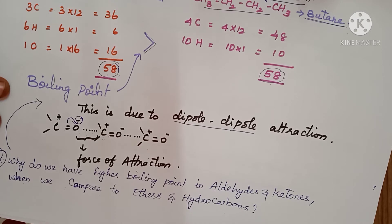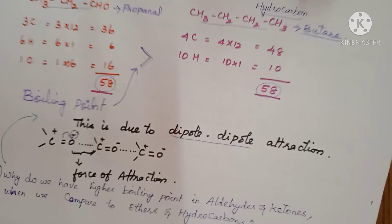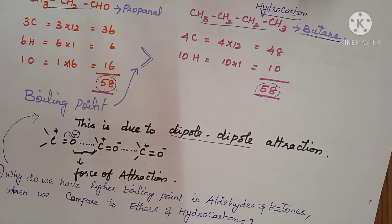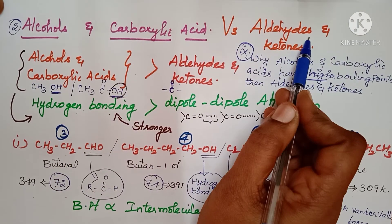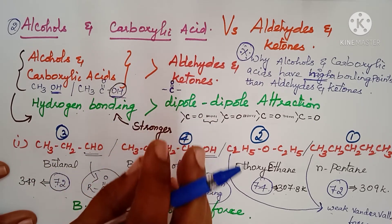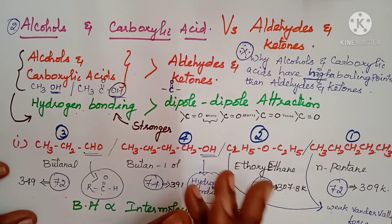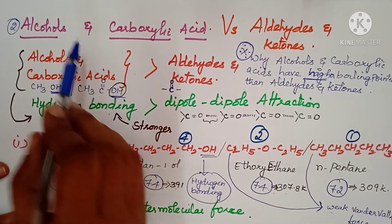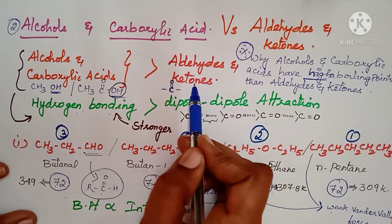This is a common exam question — they may ask why aldehydes and ketones have a higher boiling point compared to ethers and hydrocarbons: it is due to dipole-dipole interaction. Now comparing alcohols and carboxylic acids versus aldehydes and ketones — alcohols and carboxylic acids have a higher boiling point than aldehydes and ketones.